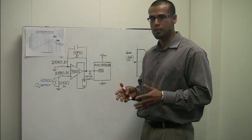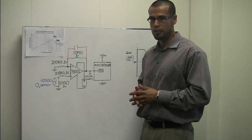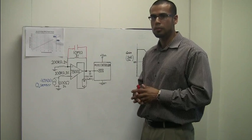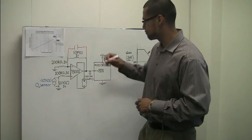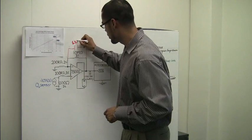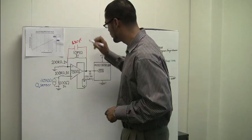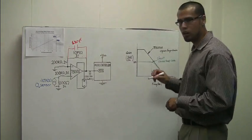However, the closest standard capacitor value to a 600 picofarad capacitor is a 620 picofarad capacitor. That results in a 25.6 Hz bandwidth. The resulting closed-loop gain curve will look like this.